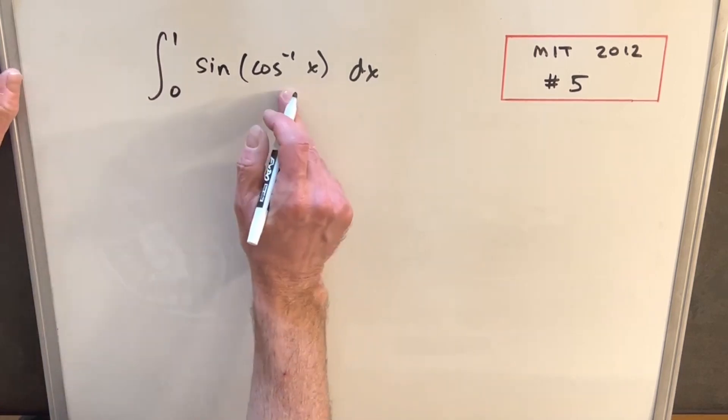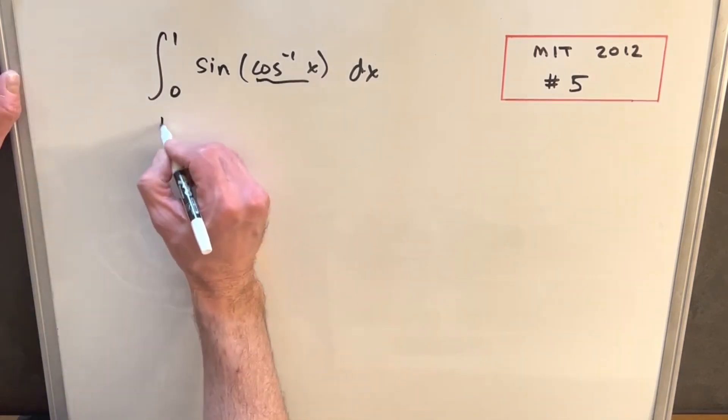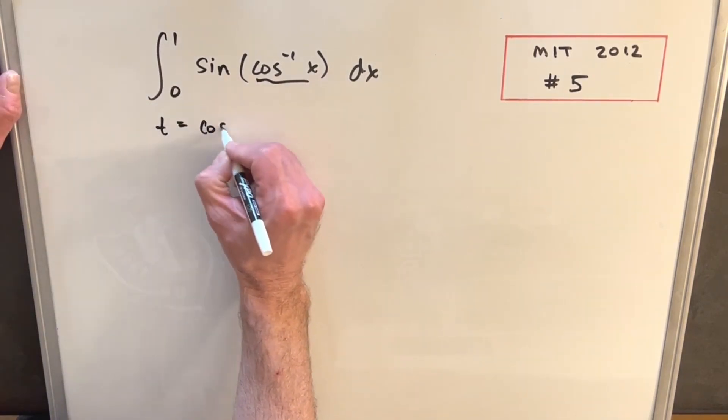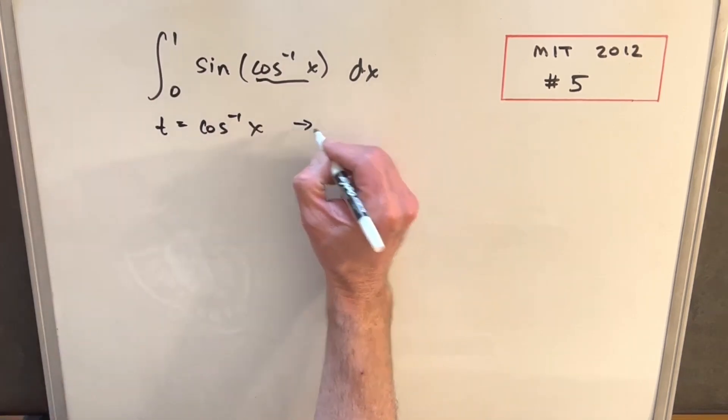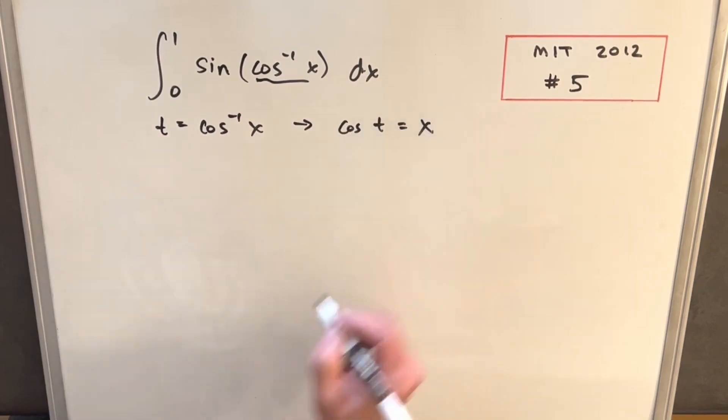What I'm going to do is, we still need to do something with this. We're going to call this a t value. Because this is an inverse, we can then say from that that cosine of t equals x.